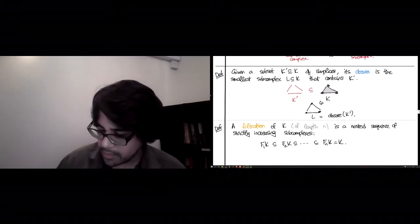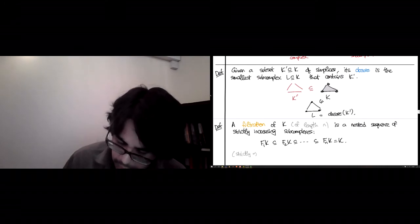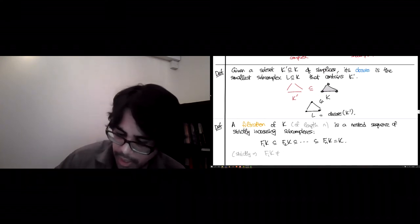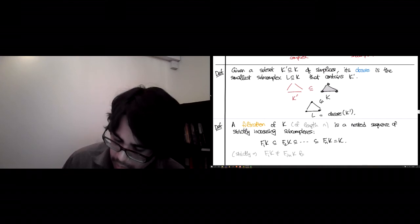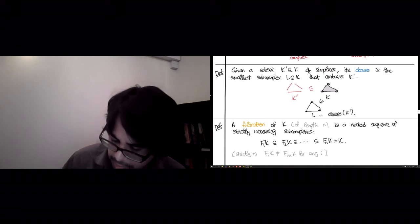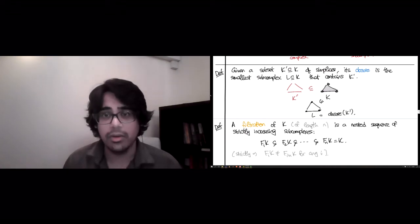So strictly increasing means that FIK cannot equal FI plus 1K for any I. So all of these subsets have to be strict, so there's no equality, except at the end where FNK is exactly equal to K.